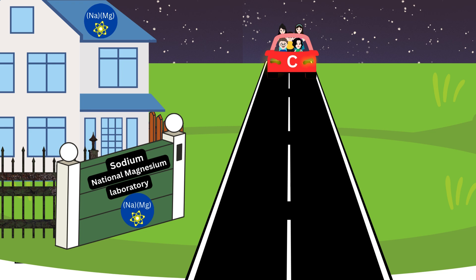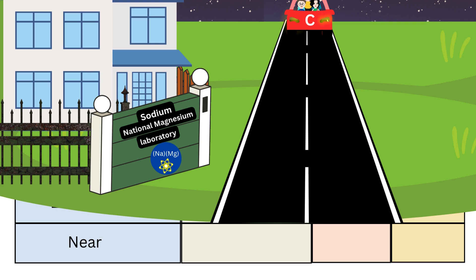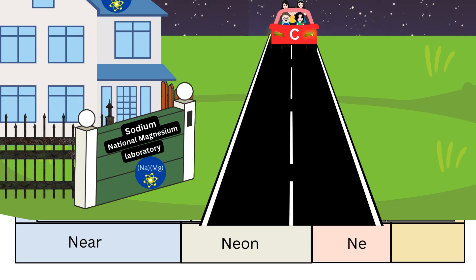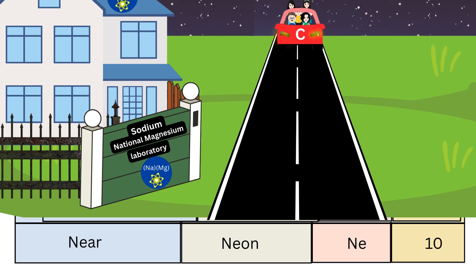When they drove fast and reached near the Sodium National Magnesium Laboratory, something happened there. So here you need to remember four key words: 'near', 'sodium', 'national', and 'magnesium'. First, remember the word 'near' for your tenth element name, that is Neon — which sounds similar to 'near'. Symbol is Ne, and atomic number is 10.